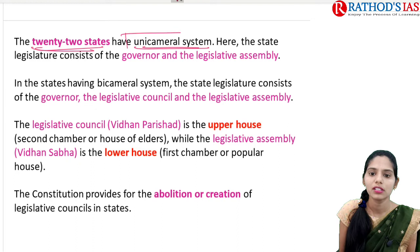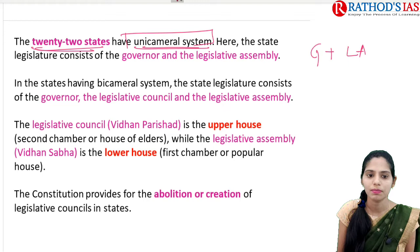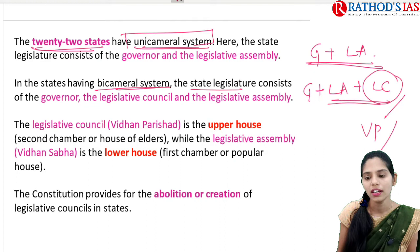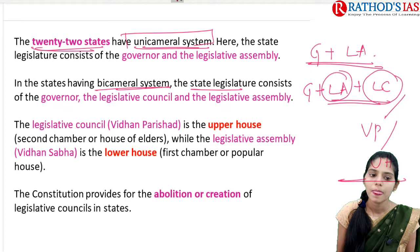There are now 22 states with the Unicameral system. Whenever we have the Unicameral system, the State Legislature mainly contains the Governor and the Legislative Assembly. If you are talking about the Bicameral system, the State Legislature contains the Governor, plus Legislative Assembly, plus Legislative Council. The Legislative Council is also called Vidhan Parishad and is the upper house. The Legislative Assembly is also called Vidhan Sabha, and it is the lower house.